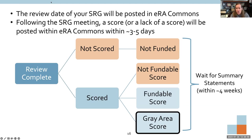If you're scored, you're either not in a fundable range, in a fundable range, or — where most applications fall — in the gray area. You'll then need to wait about two to four weeks to receive your summary statements. The score alone often doesn't tell us much about resubmission strategy — we need to wait for the summary statements. You can't reach out to your program officer until after you've received your summary statements, whose posting in eRA Commons completes the CSR cycle.